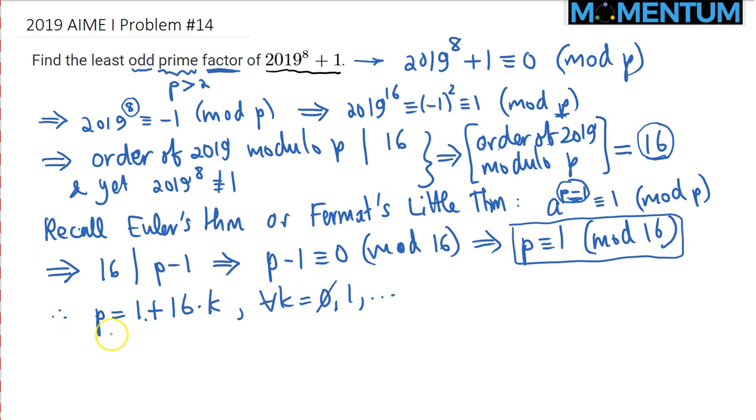Now it's time to test different values of K. Obviously I don't have to test 0, so we can start with 1. If K is equal to 1, then P would be 1 plus 16 times 1, which is 17. Let's see if that works. So we need to inspect 2019 raised to the 8th power plus 1 modulo 17.